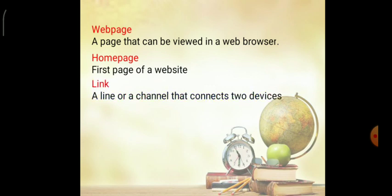Link: a link is a line or channel that connects two devices. In data communication, a link connects two devices and data is transmitted between the connected devices through this channel.